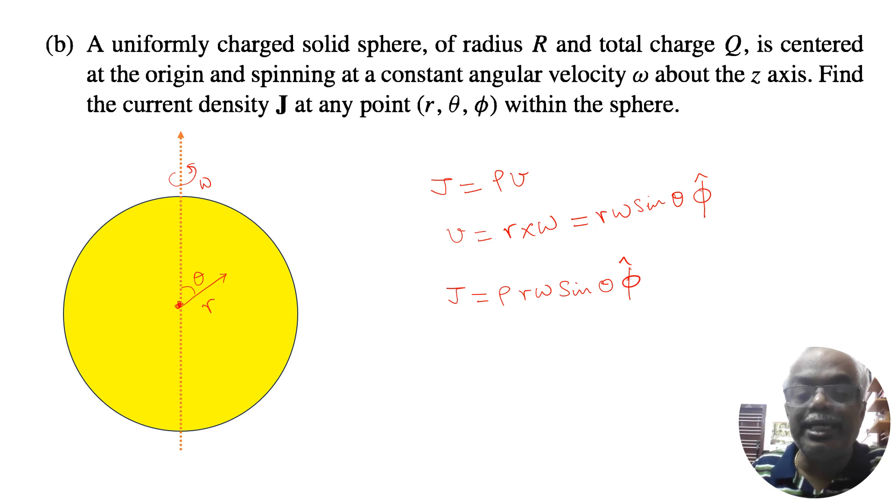Then here what is ρ. ρ by definition we know. Total charge is given. Total charge divided by volume. Volume is 4/3 π R³. Capital R is the radius of the sphere. So this is the formula. You can substitute here for ρ. So this current, current density at any point as a function of r, θ, φ is this one.